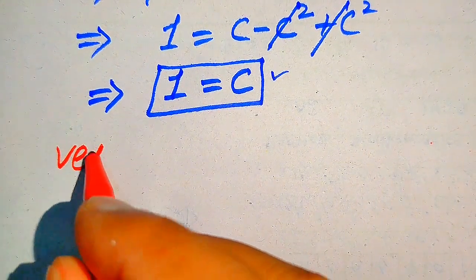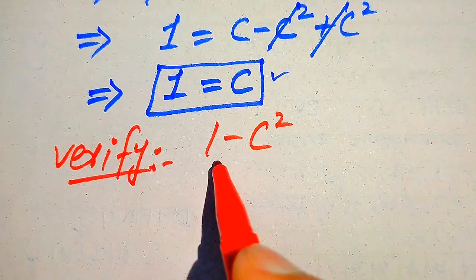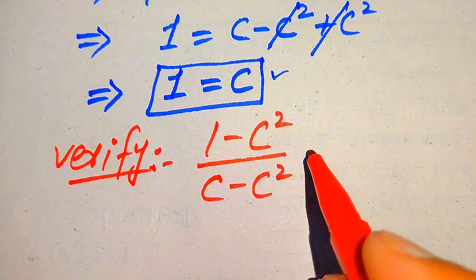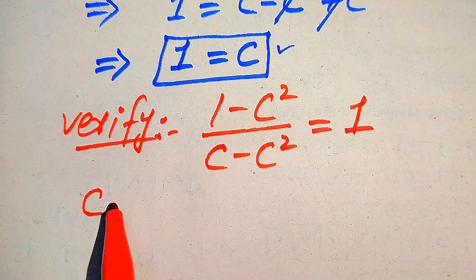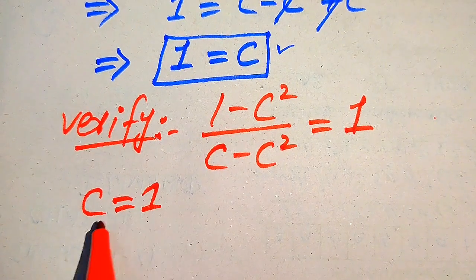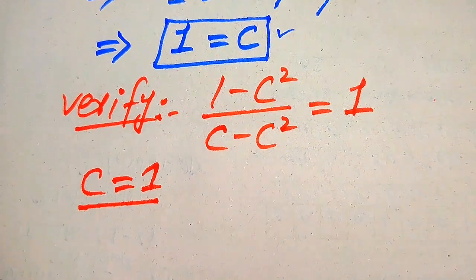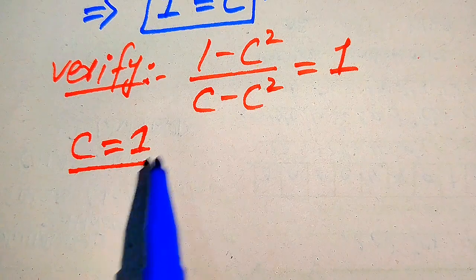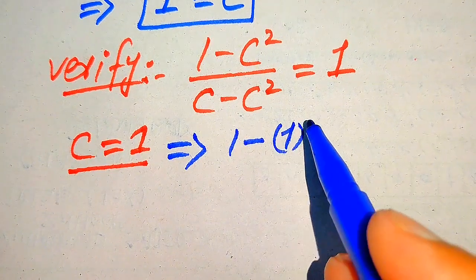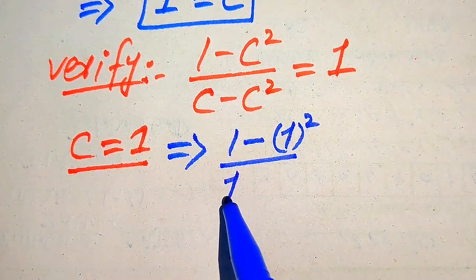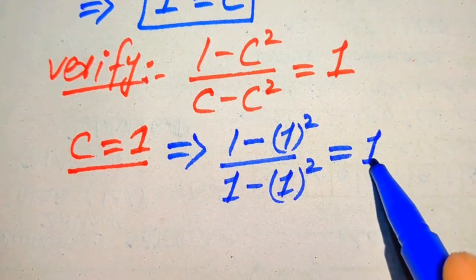For verification we copy down the given question statement: 1 minus C square divided by C minus C square is equals to 1. We verify C is equals to 1 by putting this value into the left hand side. When we put C equals 1, it is written as 1 minus 1 square divided by 1 minus 1 square, and this is equals to 1.